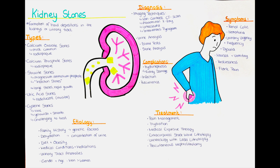Certain medical conditions such as urinary tract infections, inflammatory bowel disease and certain metabolic disorders like hyperparathyroidism can increase the risk of kidney stone formation. Structural abnormalities or blockages in the urinary tract such as kidney cysts, kidney stones or urethral strictures can also increase the risk of stone formation. Certain medications and supplements can increase the risk of kidney stone formation, including diuretics, calcium-based antacids and certain antibiotics.